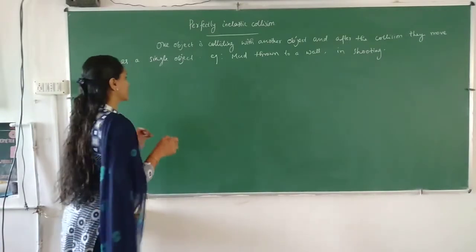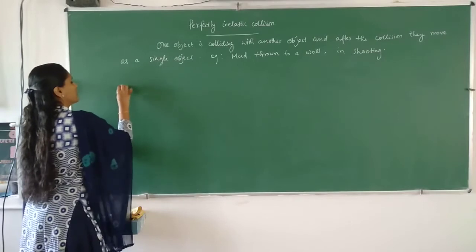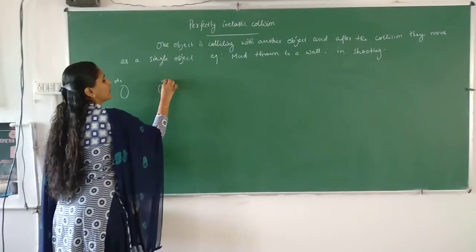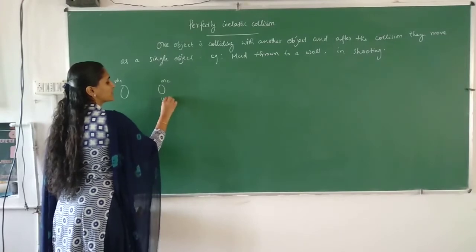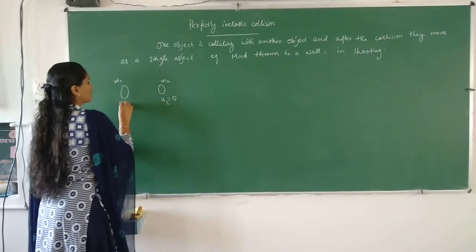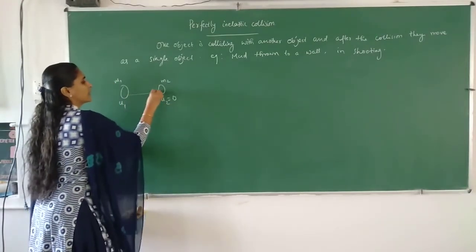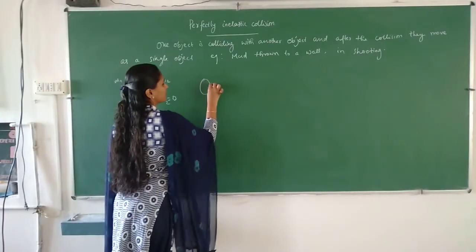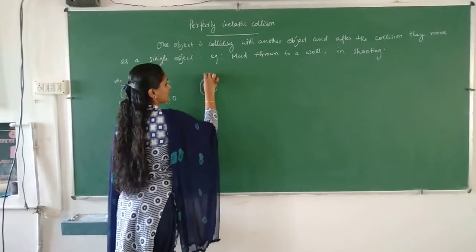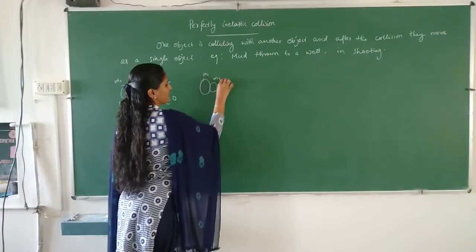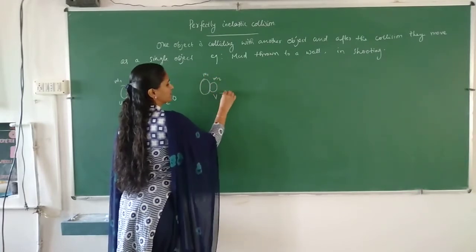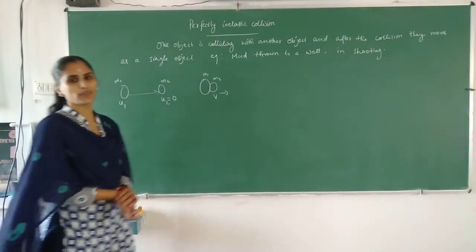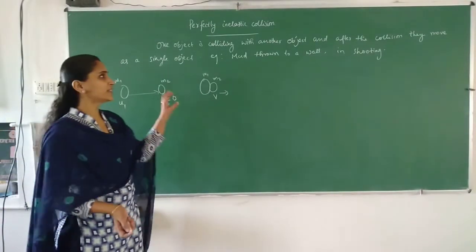So for that, we are considering two objects having masses M1 and M2. M2 is initially at rest and M1 is moving with velocity U1. They are colliding with each other, and after collision they move as a single object with a common velocity. After the collision they are moving as a single object with constant velocity V.